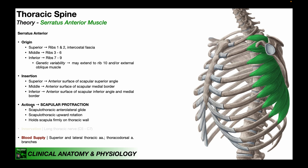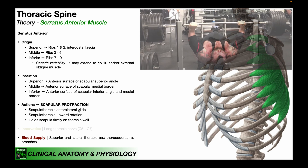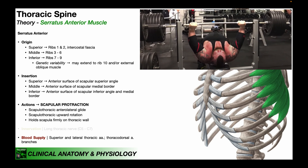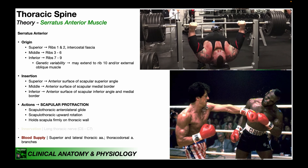The primary action of serratus anterior is scapular protraction, also called scapulothoracic anterolateral glide. Scapular protraction is when the scapulas collectively move away from the midline of the body, away from the thoracic spinous processes. This is heavily utilized during the upward phase of the bench press and in boxing when throwing a punch — the scapula protracts, or abducts, in addition to glenohumeral movement.